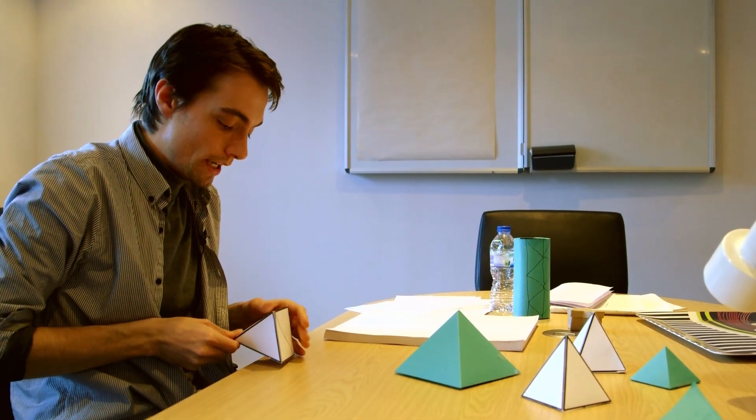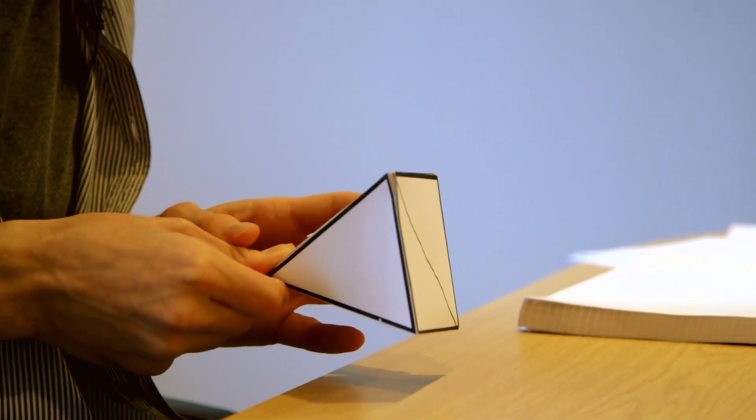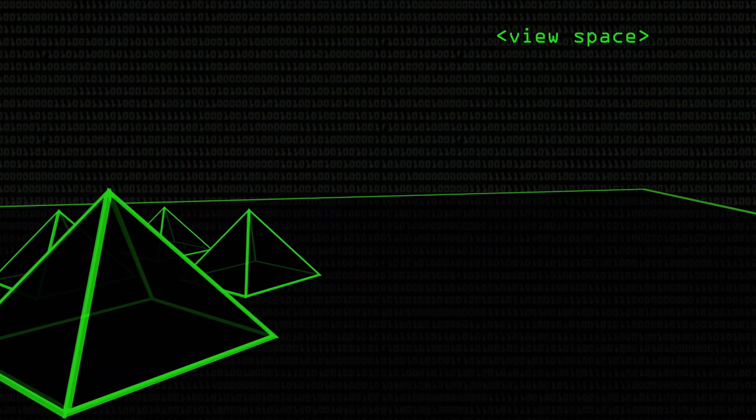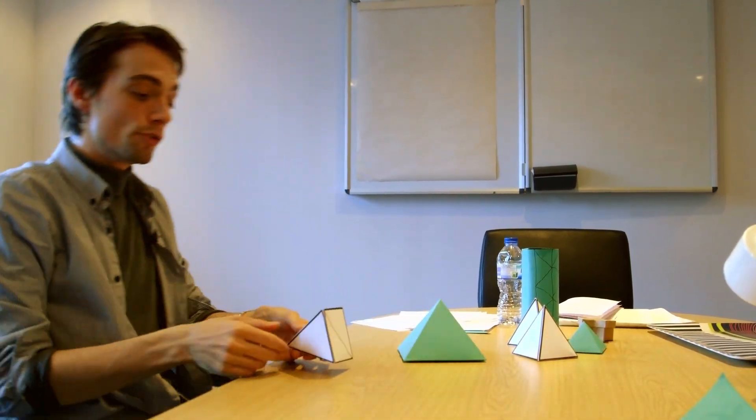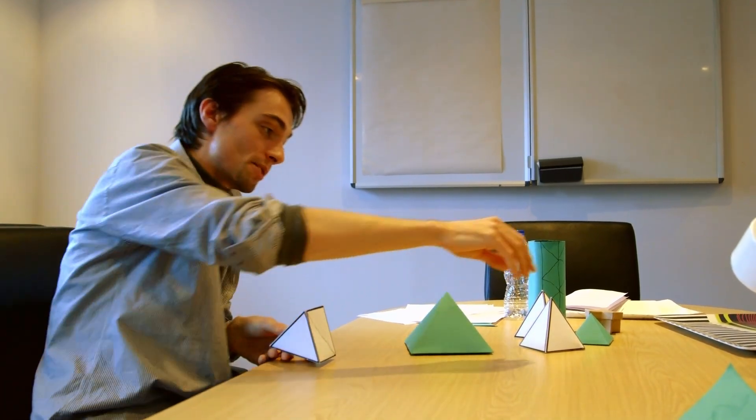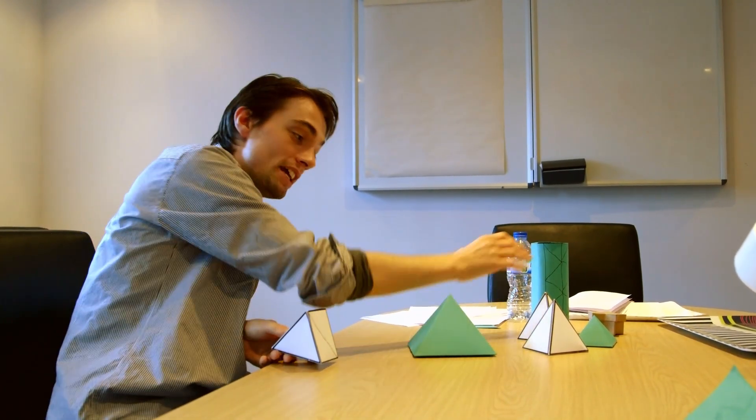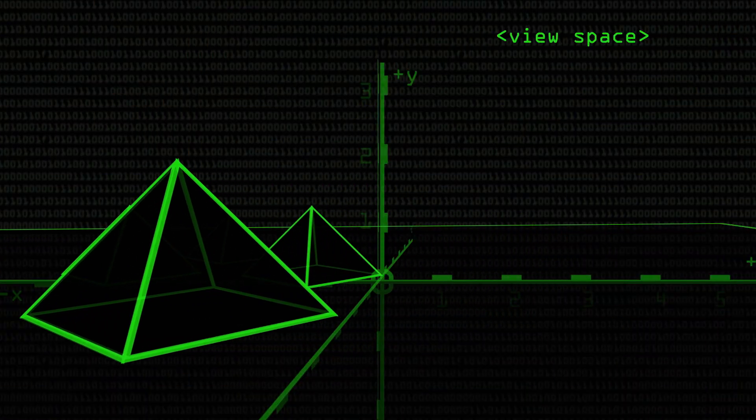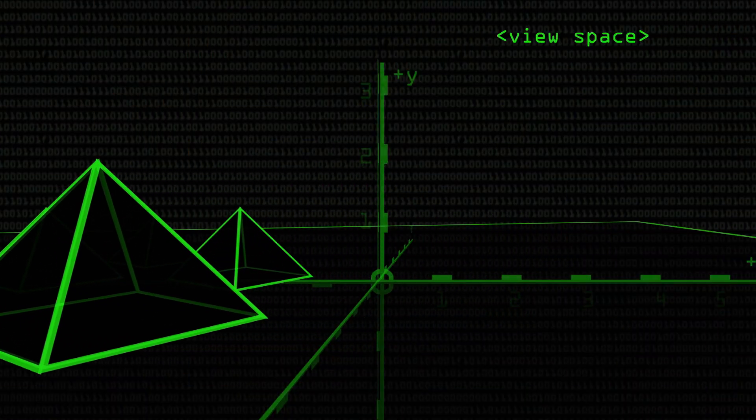As we turn the camera this way, what we actually do is apply a transformation to everything in the world, which swings it over this way. So the camera really never moves. All we're doing is applying a transformation that appears to move everything relative to the camera. We're re-specifying all of our objects in terms of the local space of the camera. And this is view space or eye space, if you like.